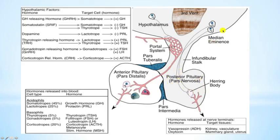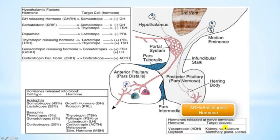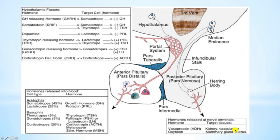In the posterior gland, the supraoptic and paraventricular nuclei have axonal endings in the pars nervosa — these axonal endings are also known as Herring bodies. The inferior hypophysial artery, a branch of the cavernous portion of the internal carotid artery, supplies this region. The two hormones released here are vasopressin, also known as ADH, which is important for water reabsorption in the collecting tubules of the kidneys, and oxytocin, which is important for uterine contraction to facilitate labor and for mammary gland contraction to facilitate lactation.